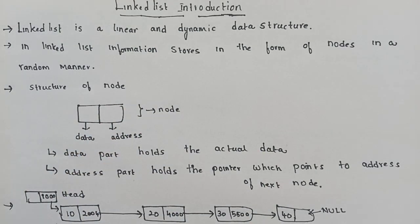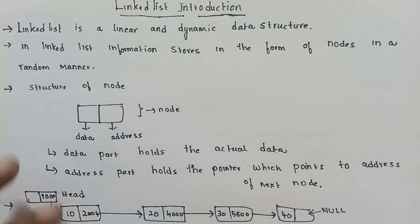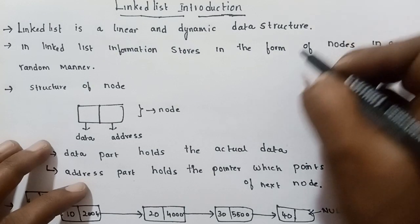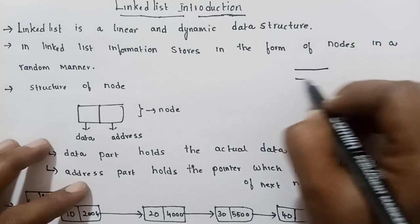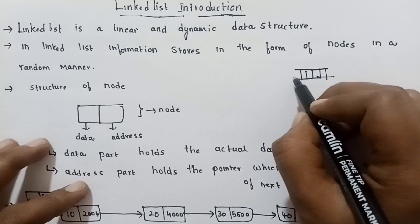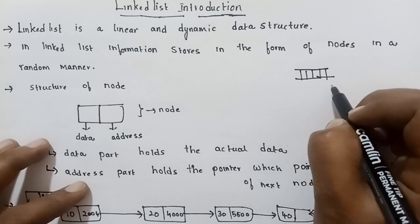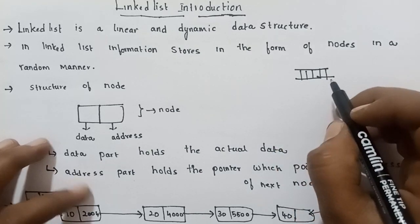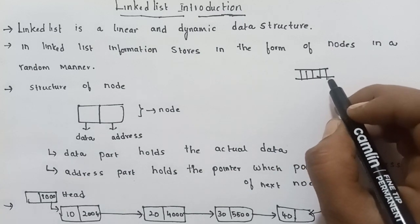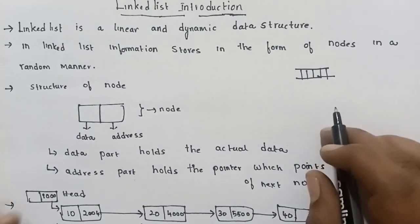Linked list is a linear and dynamic data structure. Linear means elements are connected one to another in a linear manner — that is a linear data structure.